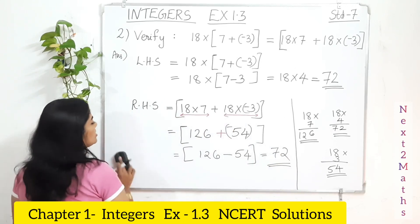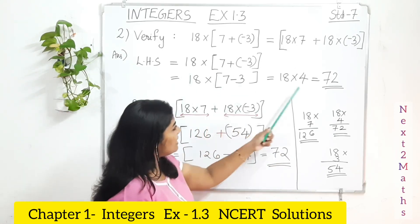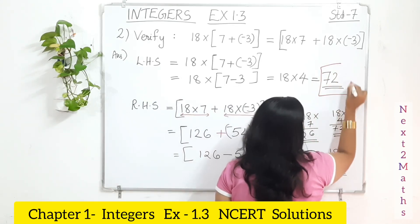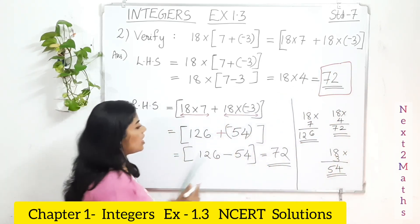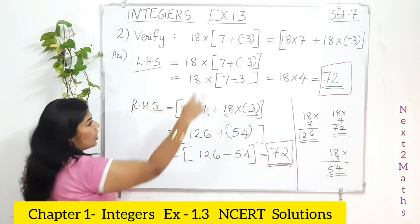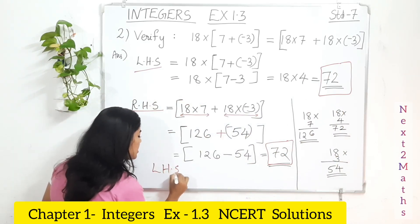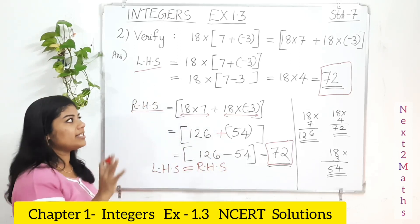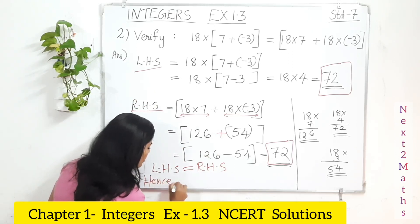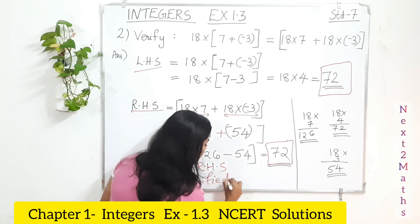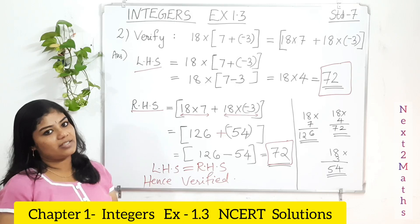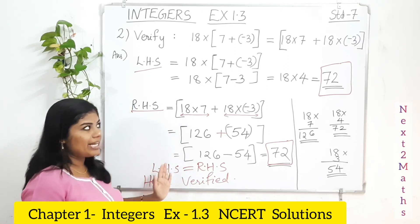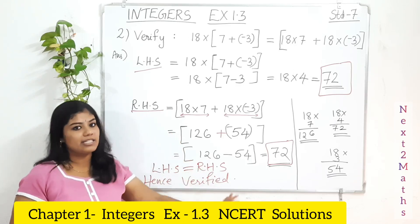Let's check both answers. LHS is 72 and RHS is also 72. Both are the same, so we can conclude that LHS equals RHS. Hence verified — it is true. This works because of the distributive property. Whatever the problem, use the same method: find LHS, then RHS, and if both are same, write LHS = RHS, hence verified.